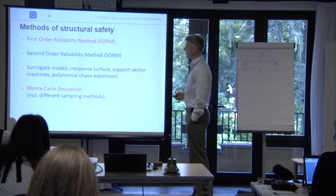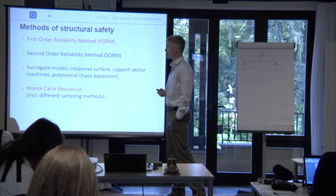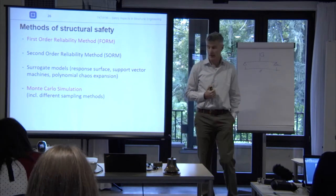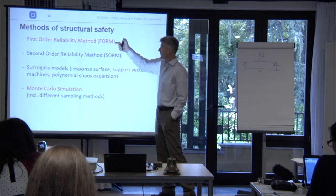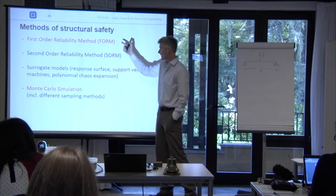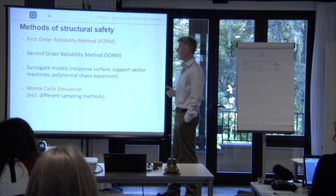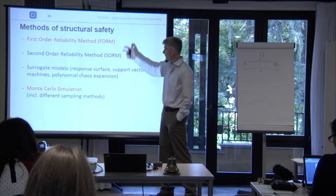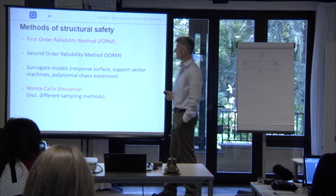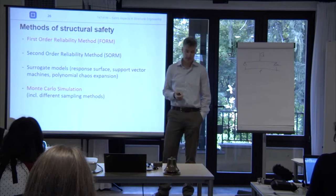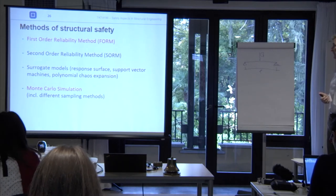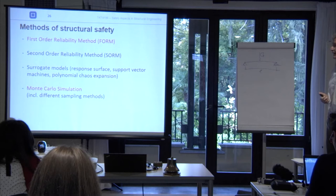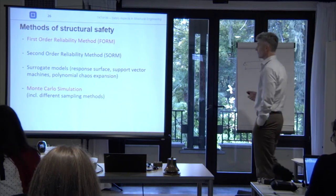There is a list of structural reliability methods. We have the First Order Reliability Method (FORM), the Second Order Reliability Method (SORM), surrogate models and response surfaces (typically used in combination with FORM/SORM), and Monte Carlo simulation. Today we will first look at Monte Carlo simulation — the most straightforward and intuitive approach — and then at the elegant iterative solution scheme that is FORM.